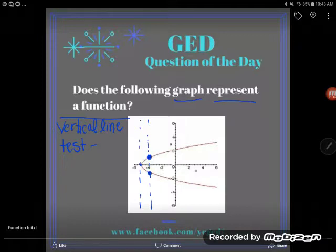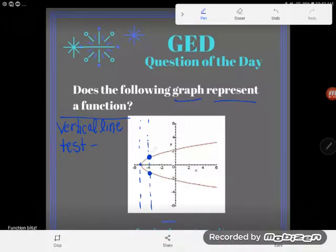That means this X value of negative 4 is paired with two different outputs or two different Y values. I caught an input value, an X, cheating with two different Y's. And remember that's kind of my little joke.